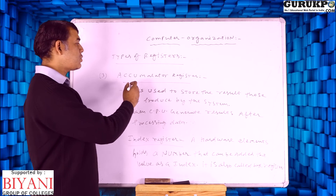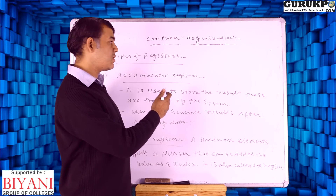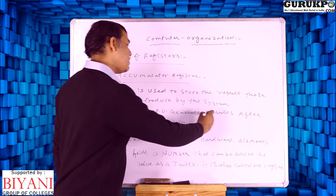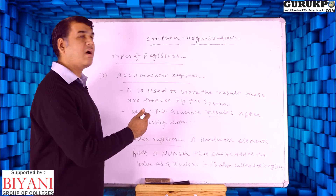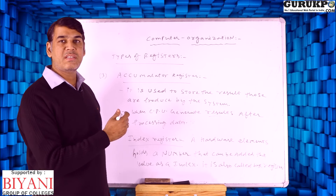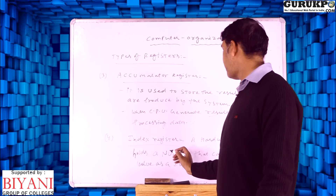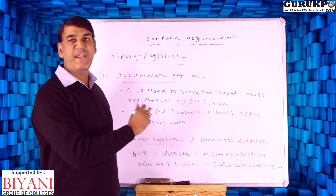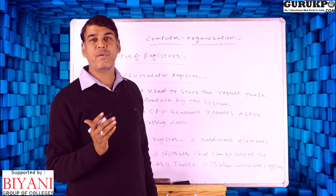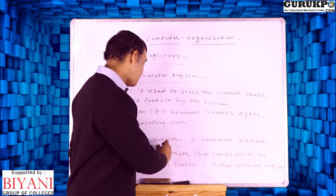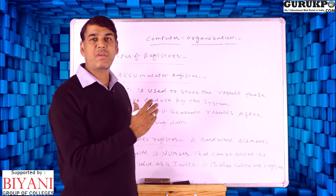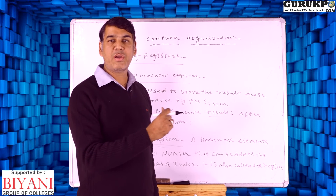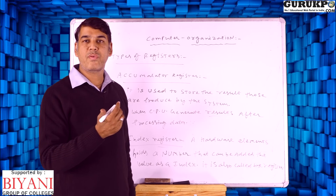Another type of register is called the accumulator register. In the accumulator register, we store the data, information, or result which we produce after processing in the system. When the CPU generates particular results after processing some data, we use the accumulator register at that time. Index register is another type of register — it holds a set of numbers that can be added to a particular register. It stores key-value pairs, and when data is stored in a particular table, we can use the index register to search for information by addressing a particular area of memory and retrieving the data.